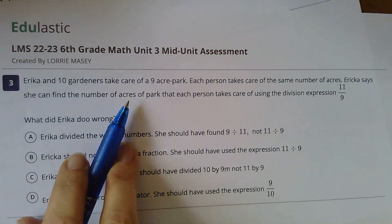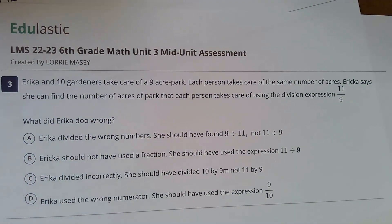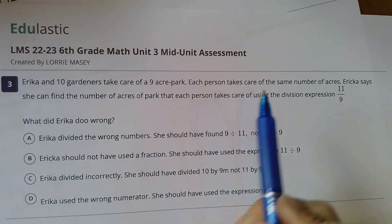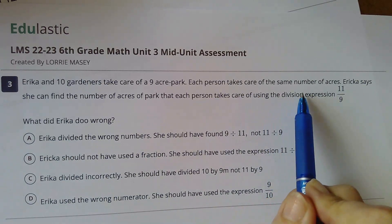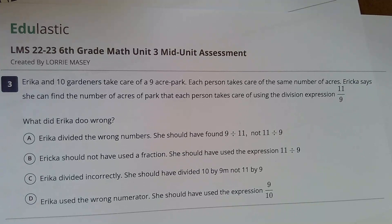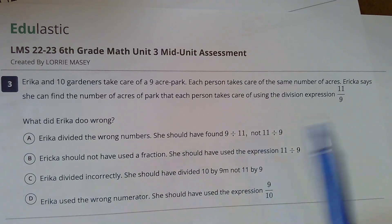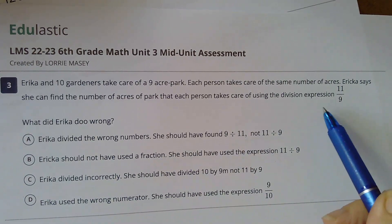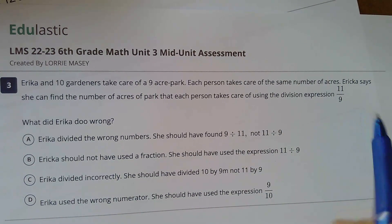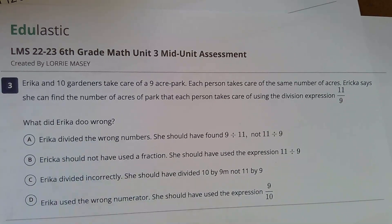Erica and 10 gardeners take care of a 9-acre park. Each person takes care of the same number of acres. Erica says she can find the number of acres of park that each person takes care of using the division expression 11 divided by 9. What did Erica do wrong?